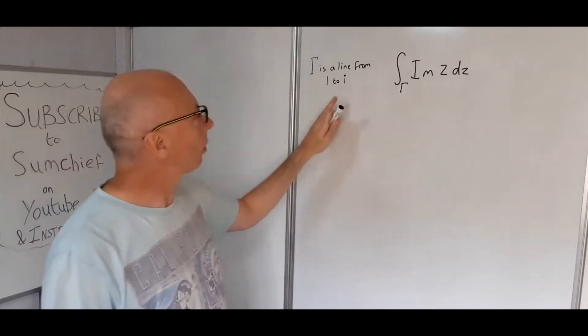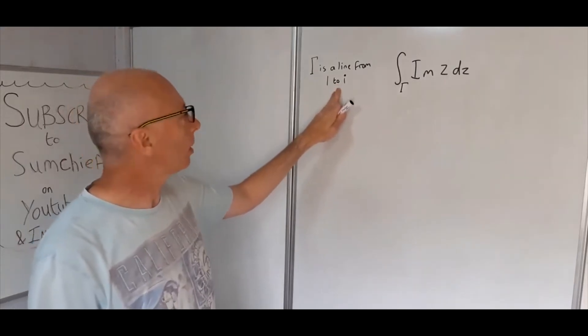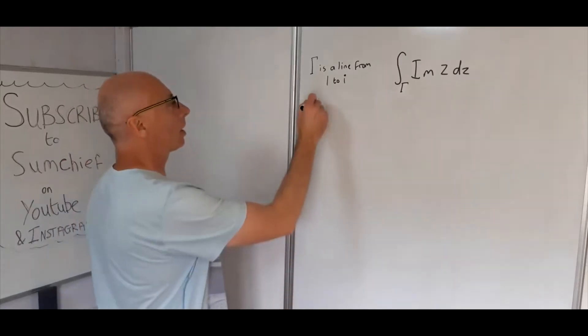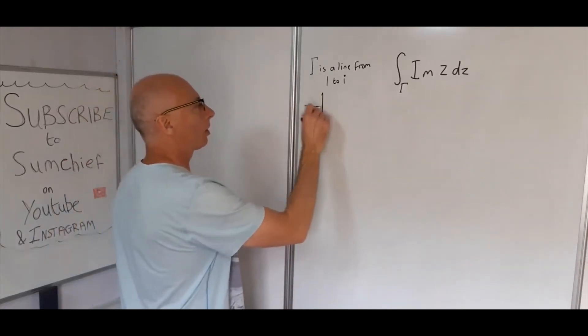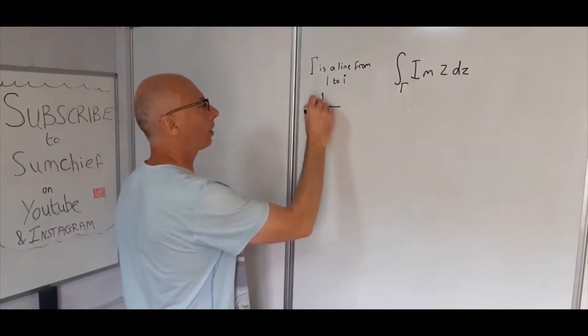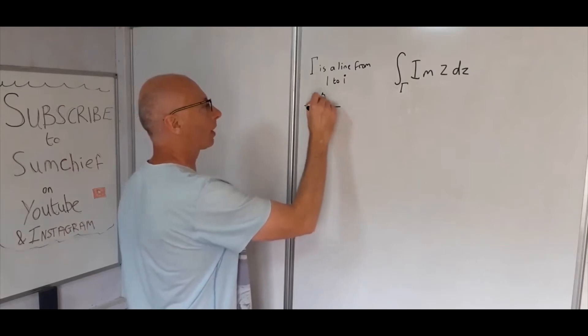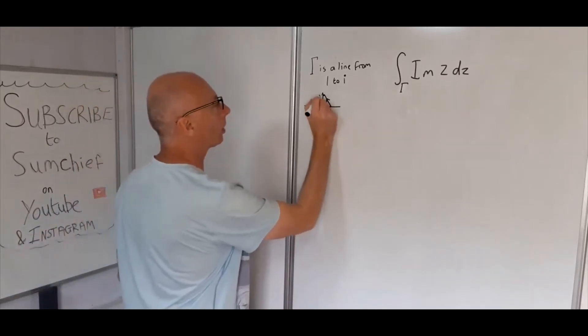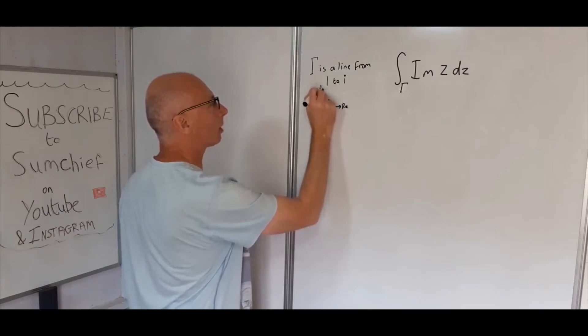First of all, let's take the parameterization of this line here and see where that takes us. So 1 to i - there's 1 and there's i, so the line goes from here to here. That's 1, that's i, that's the real axis and up here is the imaginary axis.